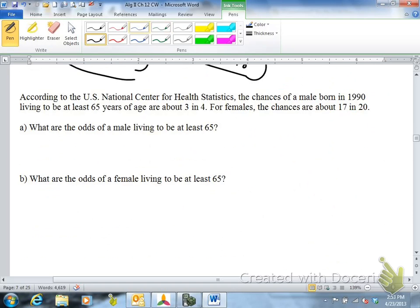Last question. According to the U.S. National Center for Health Statistics, the chance of a male born in 1990 living to be at least 65 is 3 in 4. What are the odds that a male lives to be at least 65? So you're changing 3 over 4 into odds. For females, the chances are 17 in 20. So you're changing this to odds. So see if you can change those to odds. So there are the answers. Thank you for watching this video.